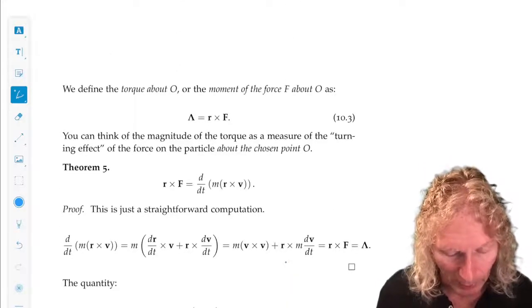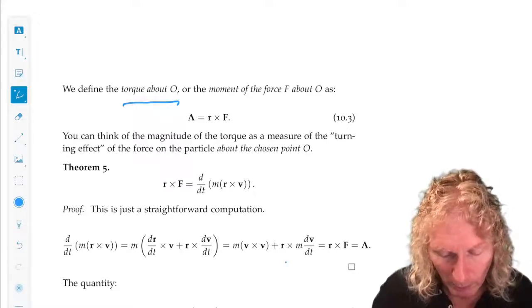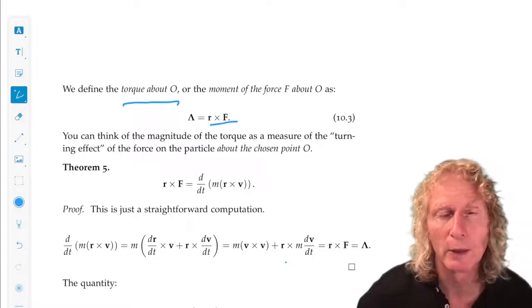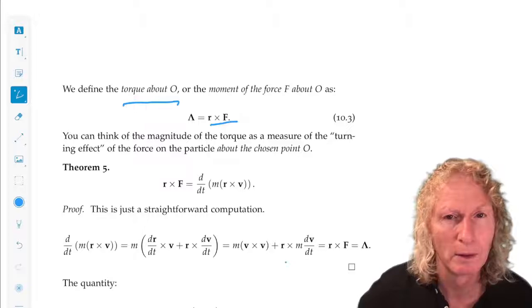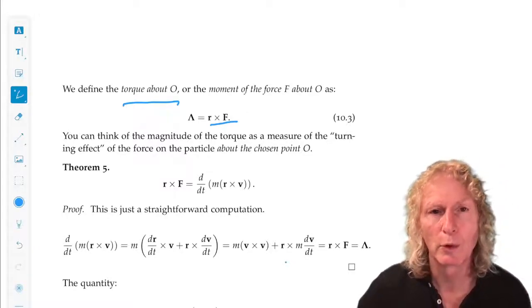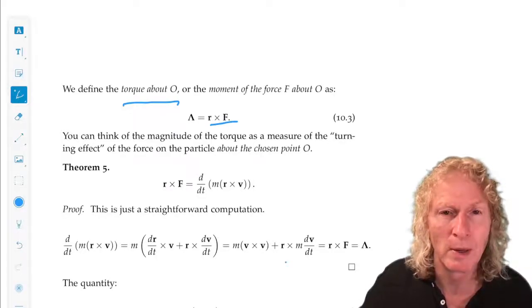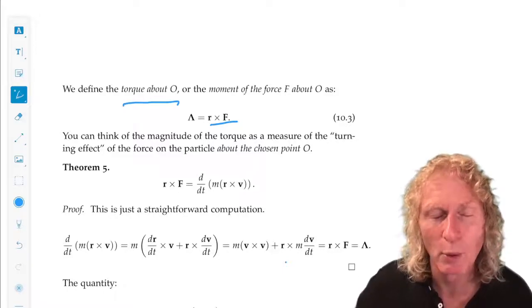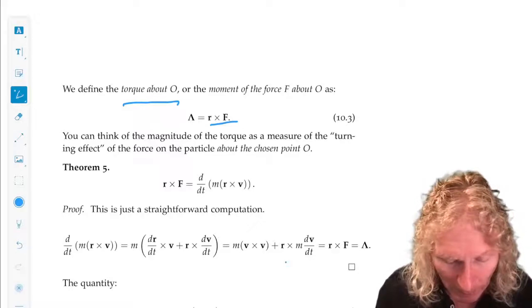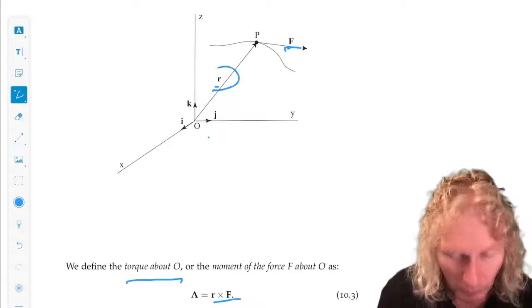Then we define the torque about O, sometimes it's called the moment of the force about O, as R cross F, and we denote it by uppercase lambda. Torque about O. That's important because the torque depends on the point about which it is computed. By that I mean the position vector is the key point here.